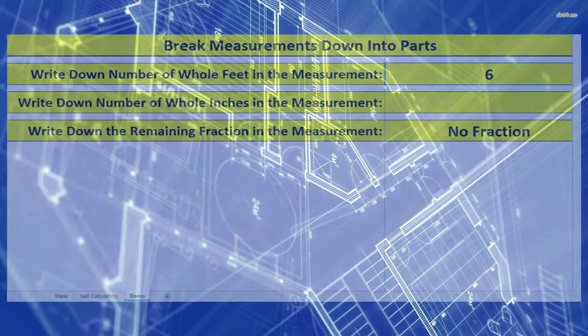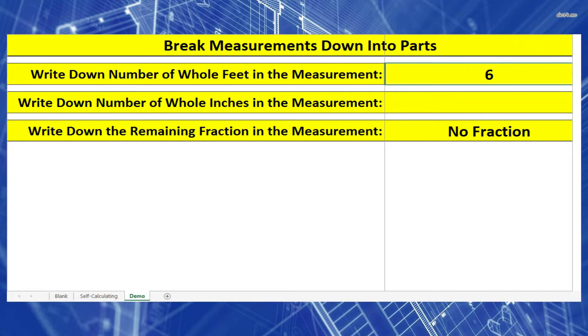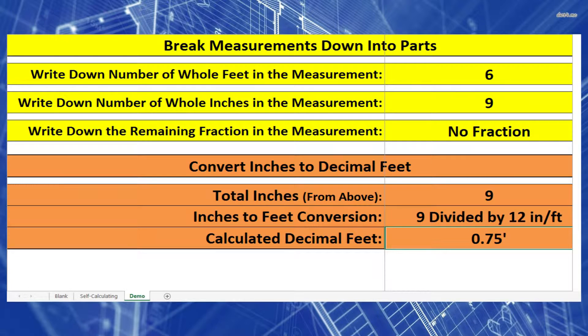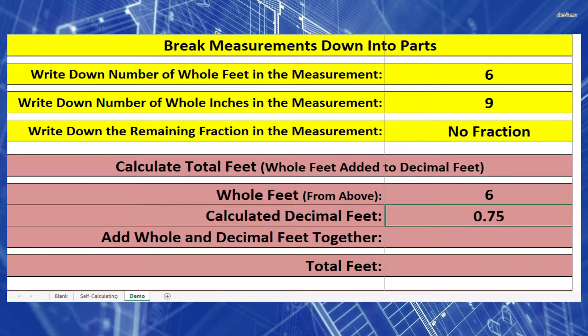So let's take out our piece of paper and write down in separate areas 6 foot and 9 inches, because we deal with them differently. Let's start with the 9 inches. Let's convert it to decimal feet. To do that, we need to take 9 inches and divide it by 12 inches per foot, and that gives us 0.75 feet. Now we're just going to take our whole feet and add it to our decimal feet, and that should give us 6.75 feet.